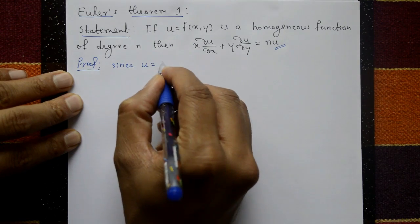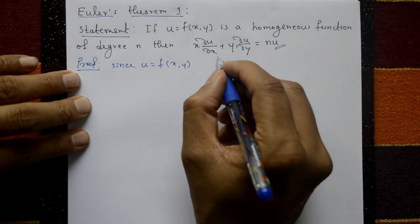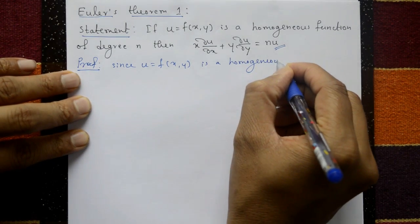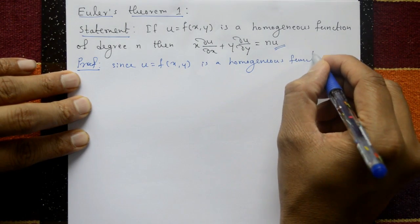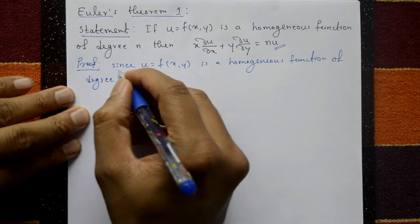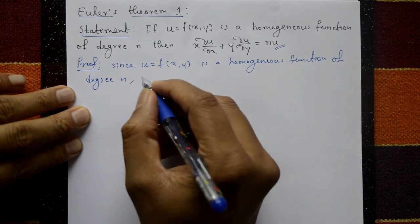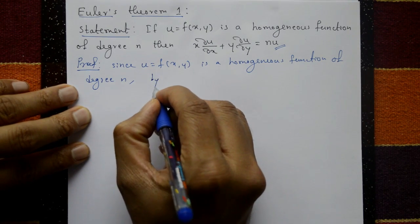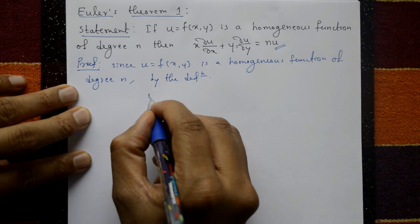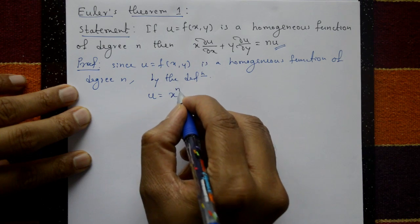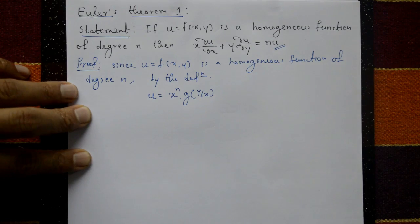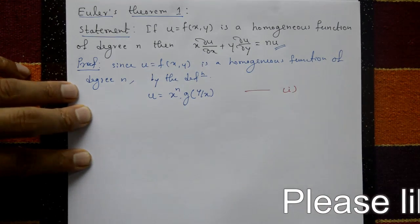Since u = f(x, y) is a homogeneous function of degree n, by the definition, u is given as u = xⁿ · g(y/x). Call this equation number one.